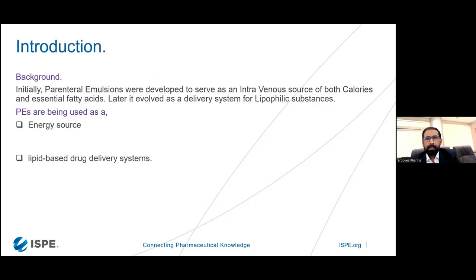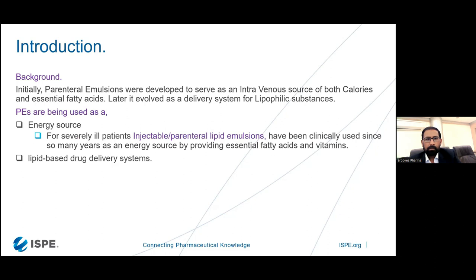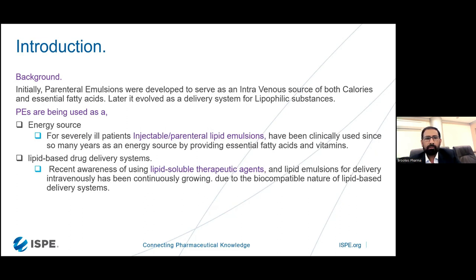As far as the introduction or background of parenteral emulsions is concerned, initially parenteral emulsions were developed to serve as an intravenous source for both calories and essential fatty acids. Later, they evolved into a delivery system for lipophilic substances. These lipophilic substances can now be mixed in the emulsion and delivered to the body. A second use is as a source of energy, and third is the lipid-based drug delivery system. Many recent events using lipid-soluble therapeutic agents in lipid emulsions for intravenous delivery have been continuously growing due to the biocompatible nature of lipid-based delivery systems.